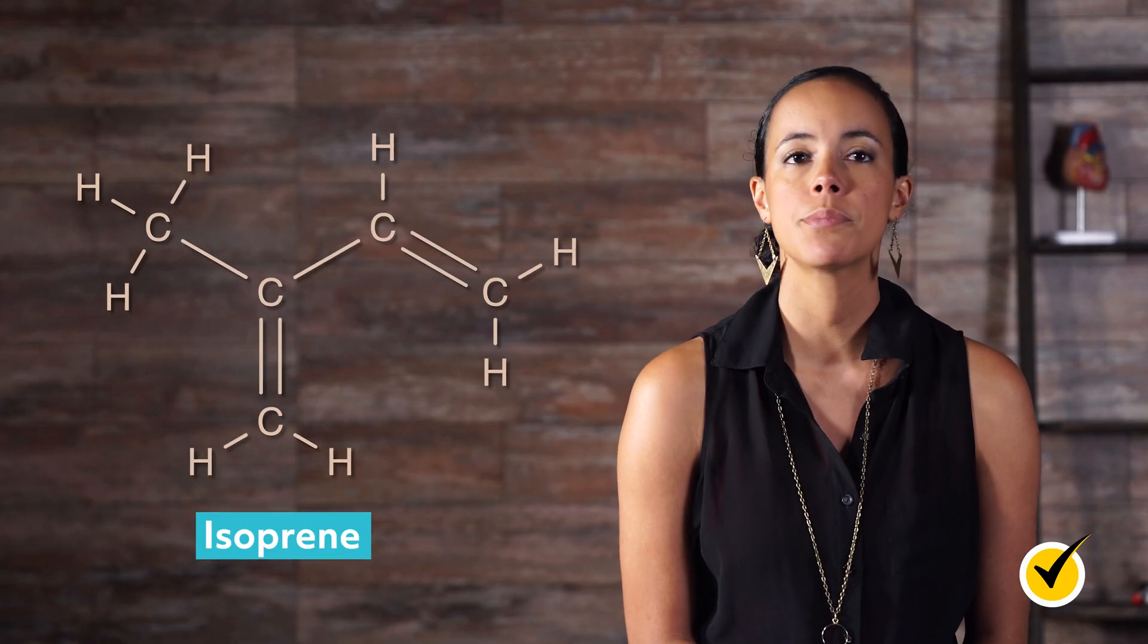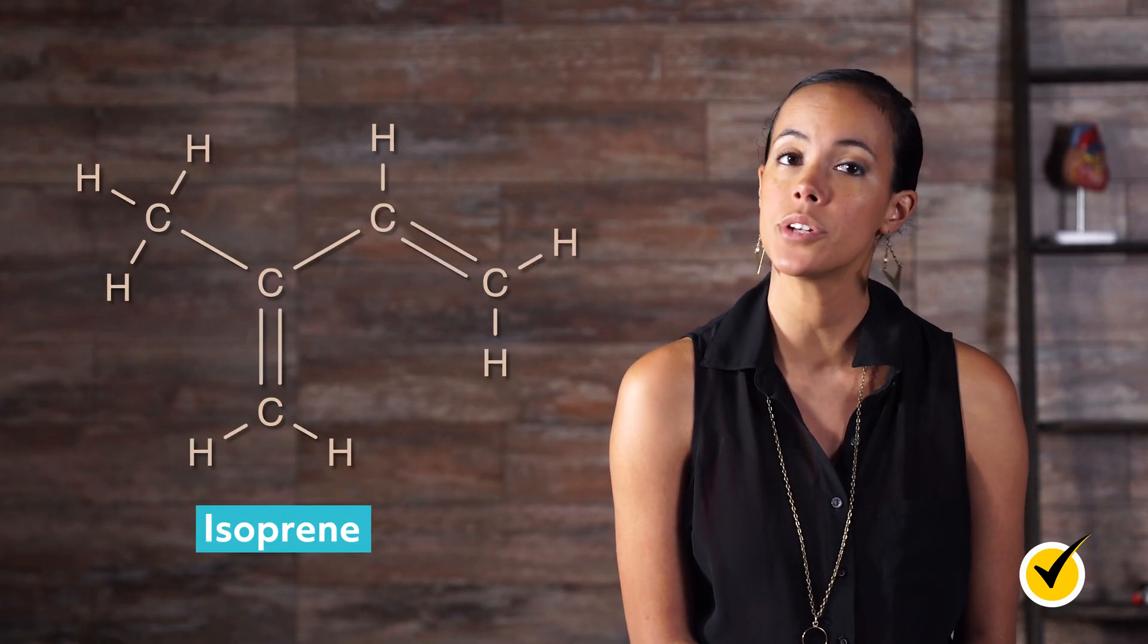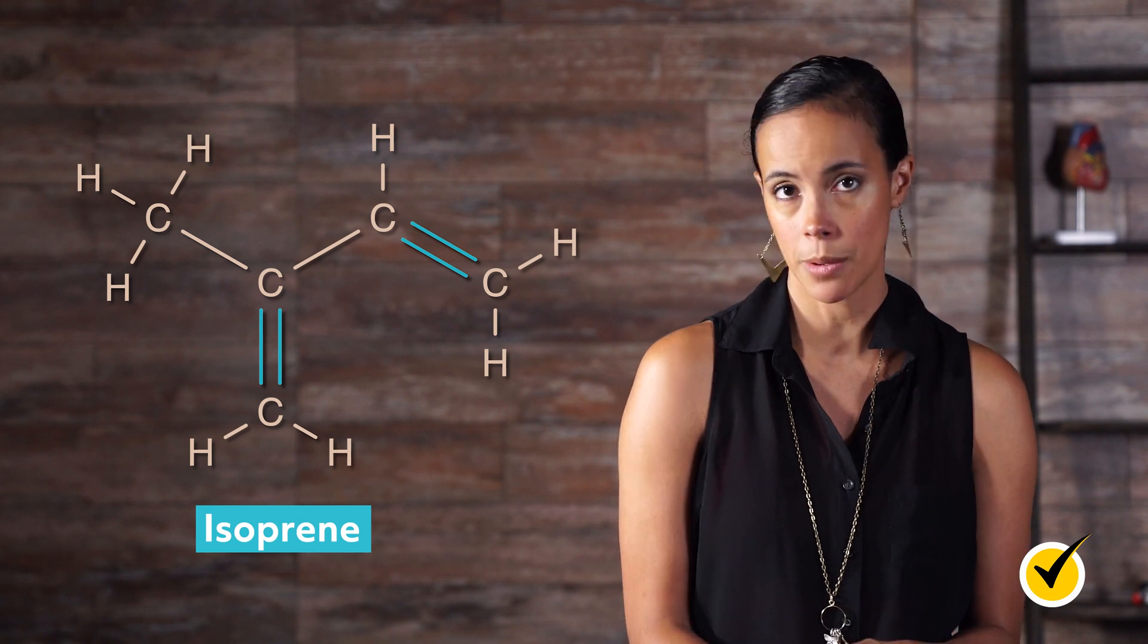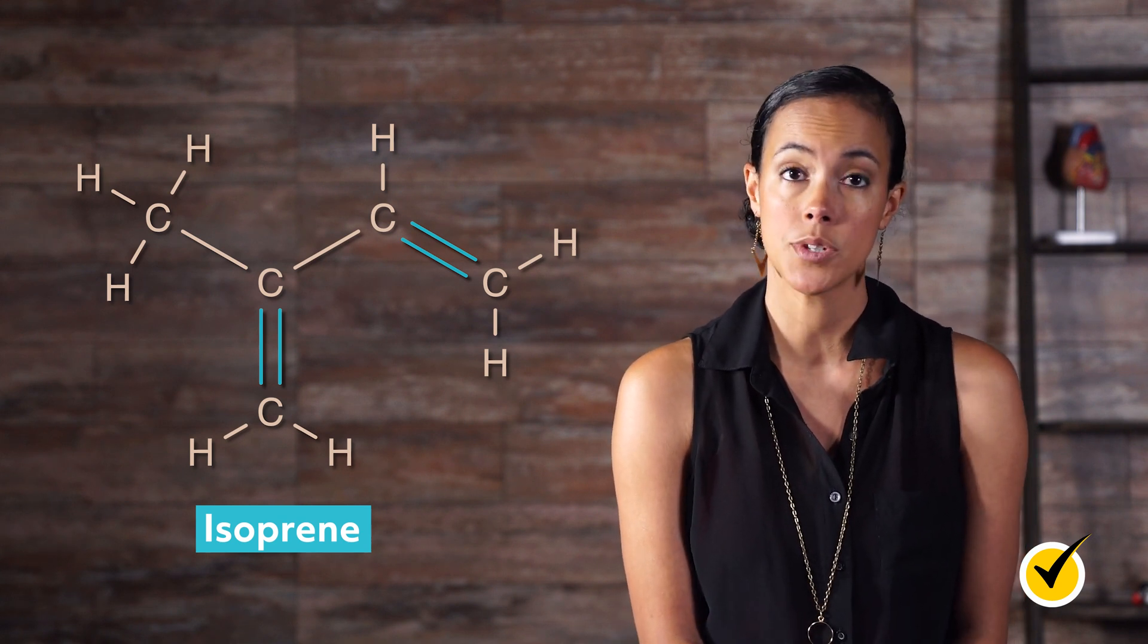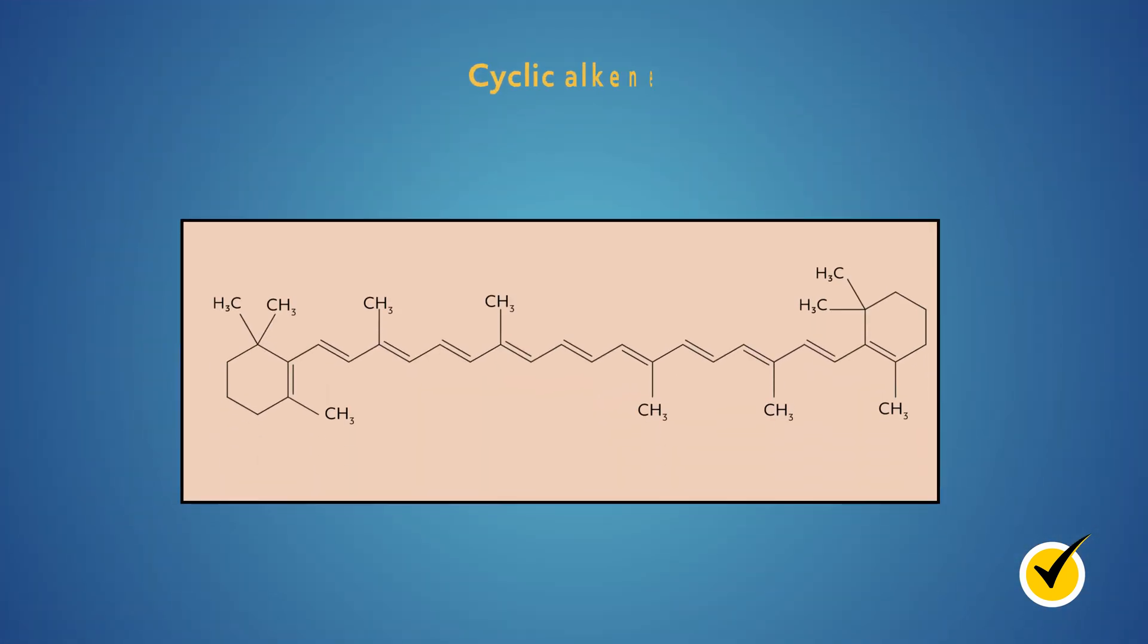Alkenes can be of varying length, straight-chained or branched, and have multiple double bonds. Take isoprene as an example. Isoprene is a branched diene, two double bonds, that is commonly found in plants and animals.